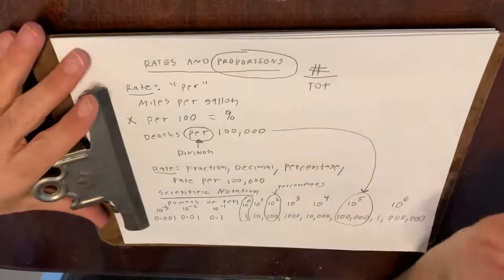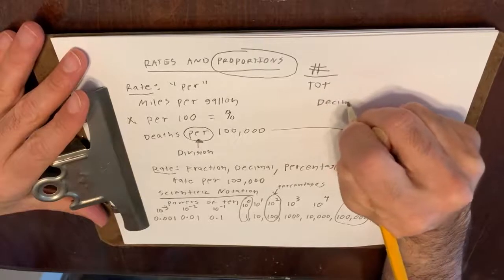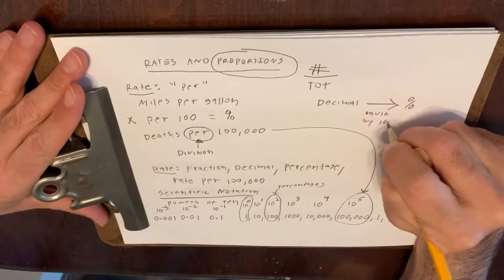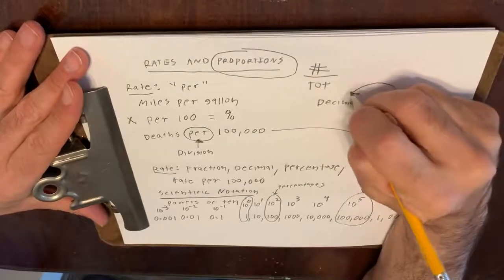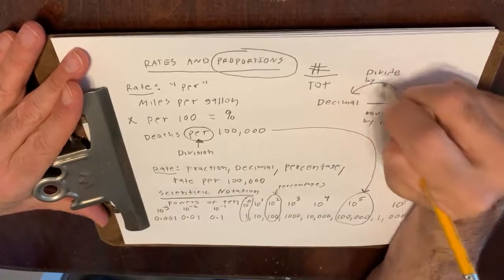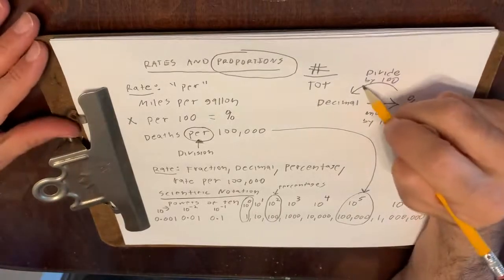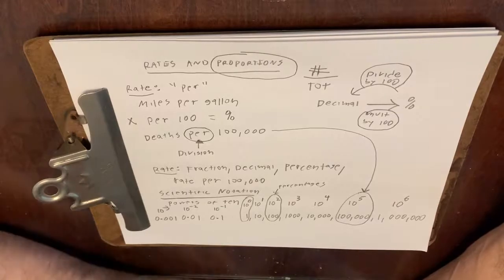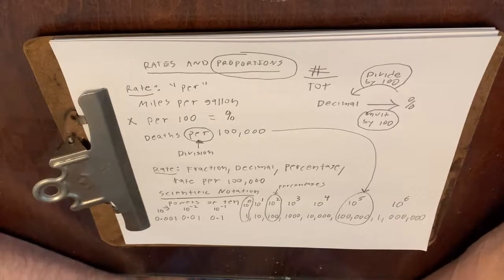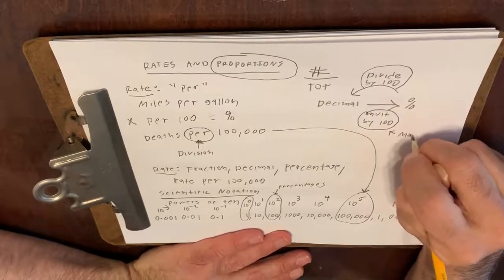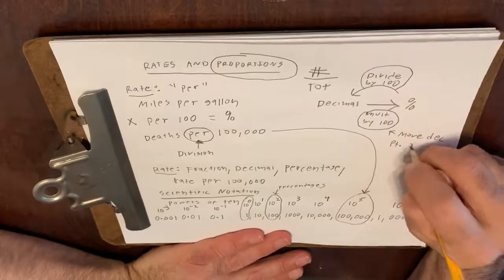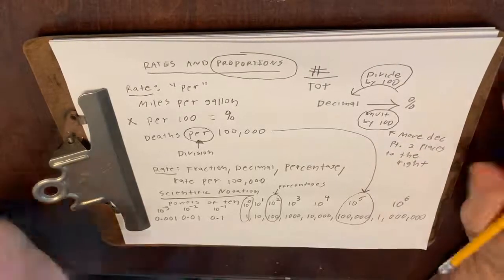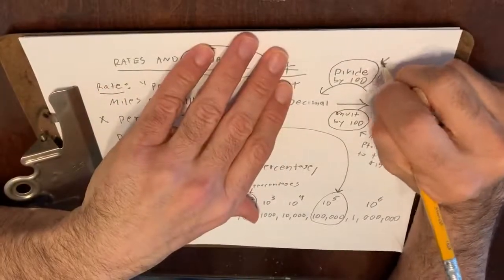If you want to convert a decimal into a percent, we multiply by 100. If you want to convert a percentage back into a decimal, we divide by 100. Because our place value system is a decimal system based on powers of 10, multiplying by 100 means moving the decimal point two places to the right, and dividing by 100 means moving the decimal point two places to the left.